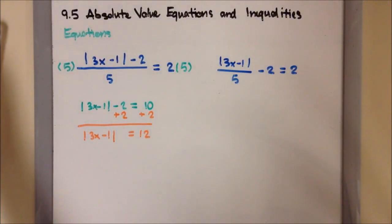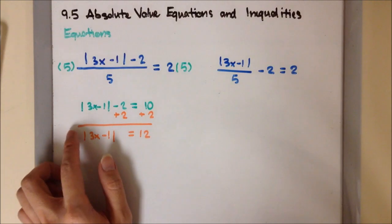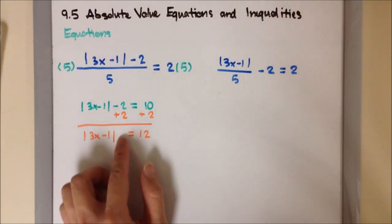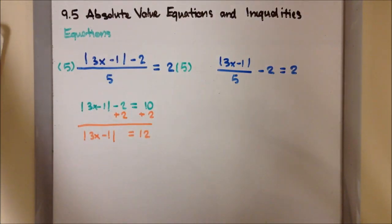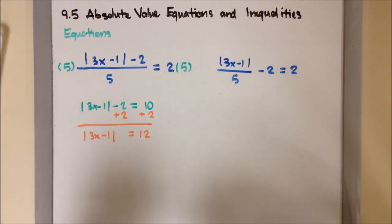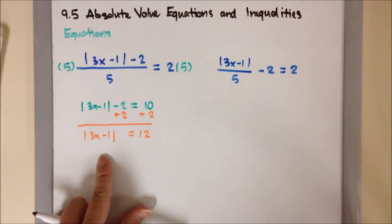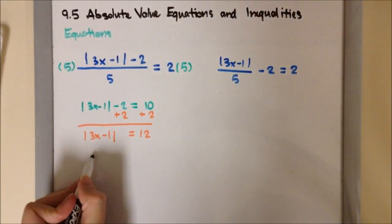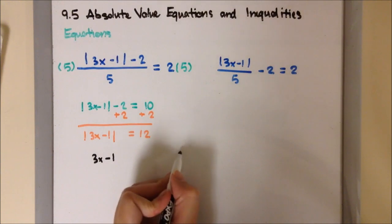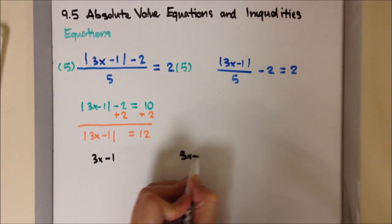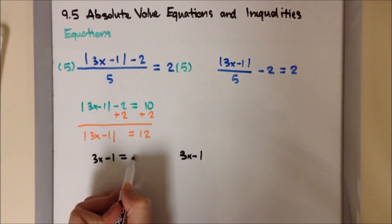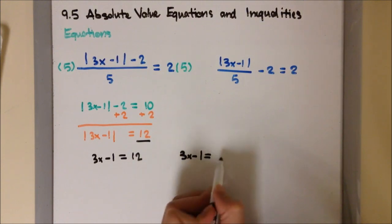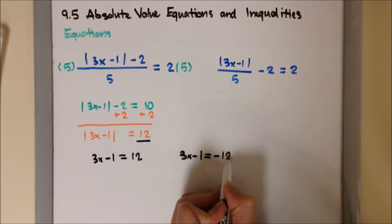Since the absolute value does not have numbers in front, no numbers behind, and no numbers underneath — it's by itself equal to a positive — I can keep going. I'm going to write the inside twice: 3x minus 1 over here, and 3x minus 1 over here. The first one equals the original number, which is 12, and the second one equals the opposite of 12, so negative 12.